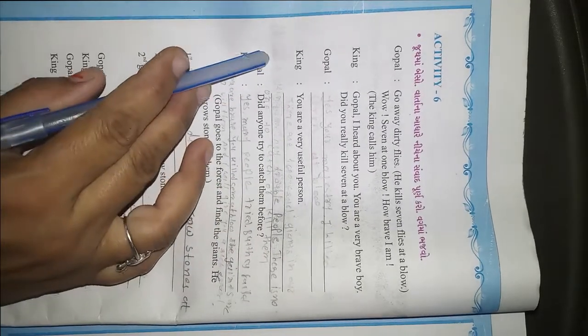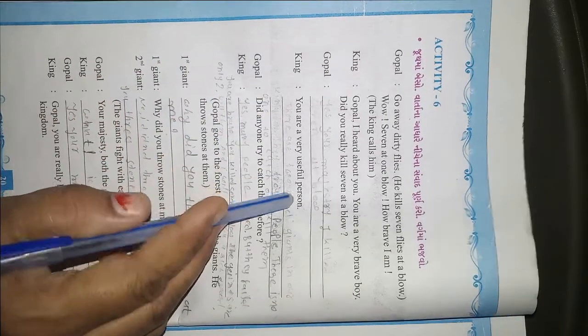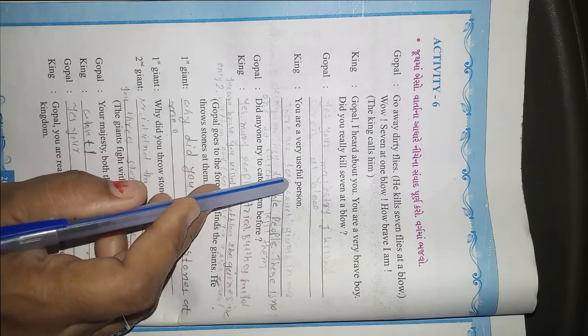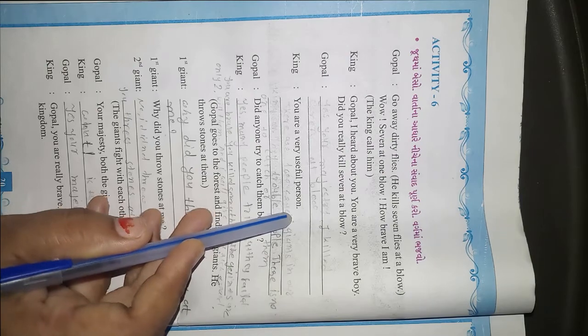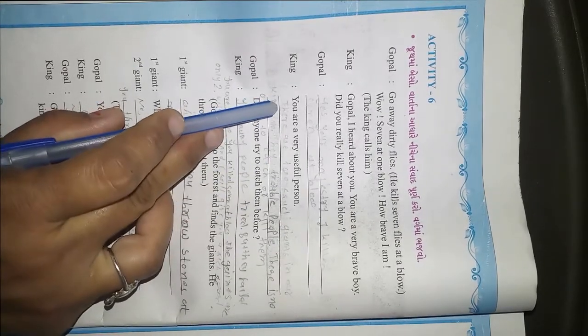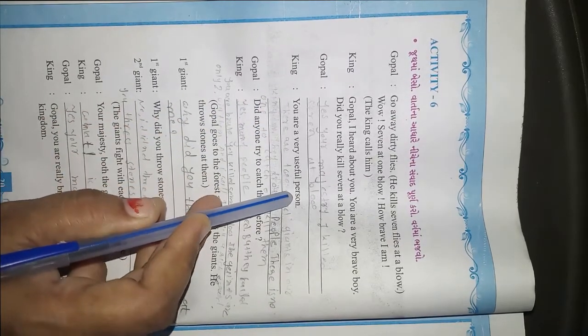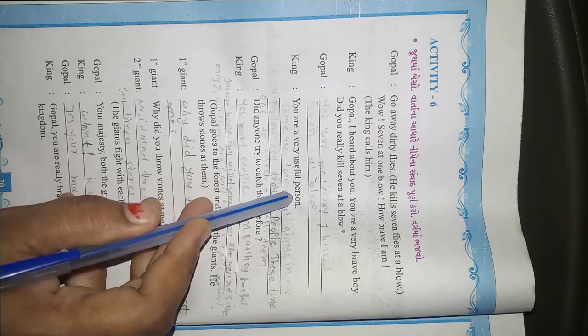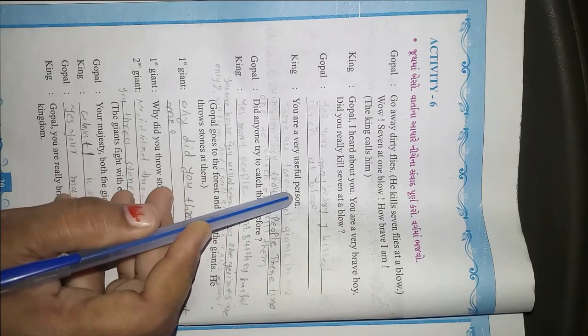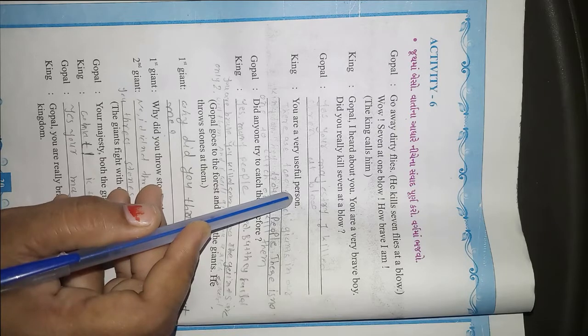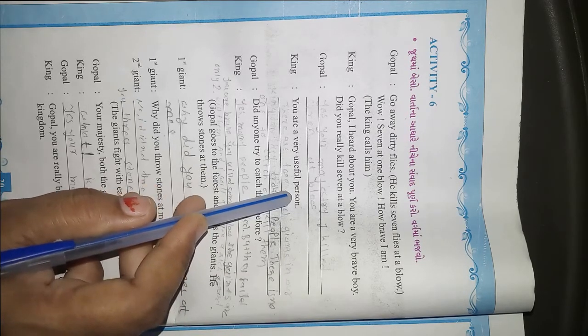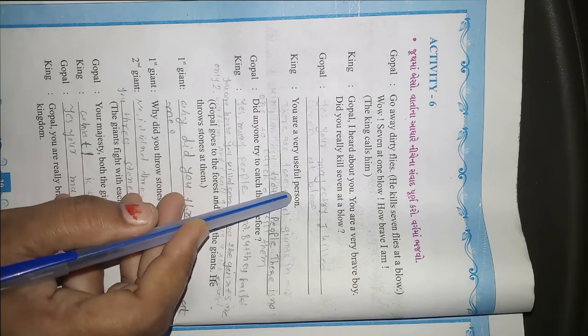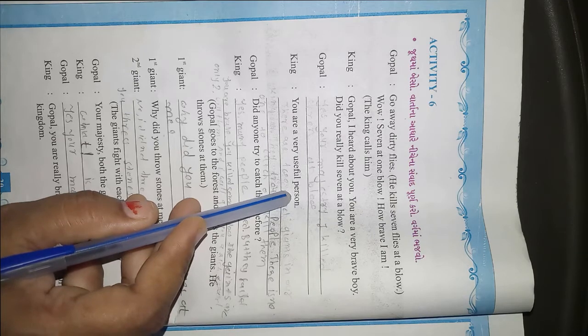The King heard about someone who killed seven. The King said, 'You are a very useful person. You are brave.' The King asked, 'Did you really kill seven people?' He said yes. The King then told him about a problem.